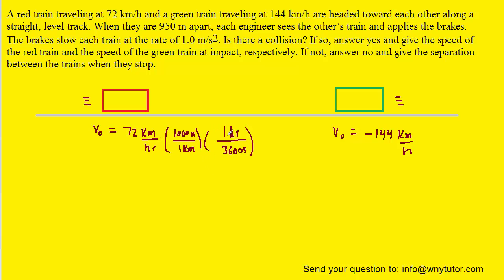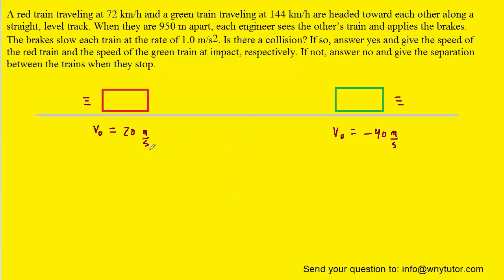We can use the following two conversion factors. You'll notice that the kilometers will cancel out, the hours will also cancel out, and that will leave us with meters per second. Performing the conversion gives us positive 20 meters per second and negative 40 meters per second for the red and green train, respectively.